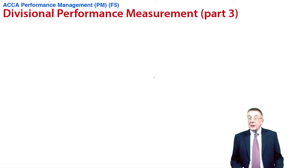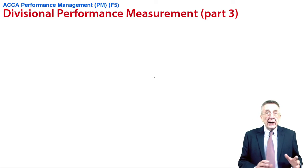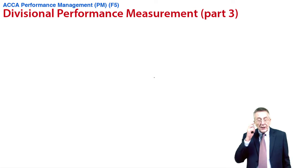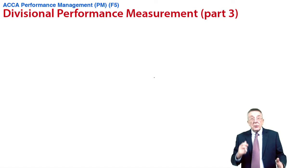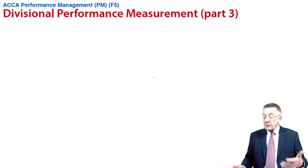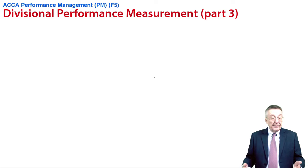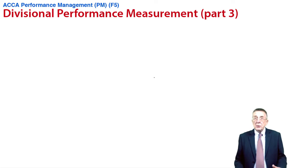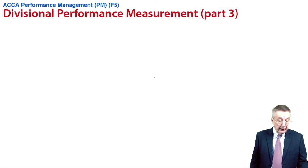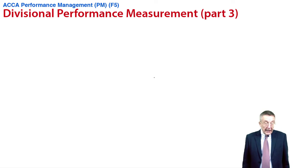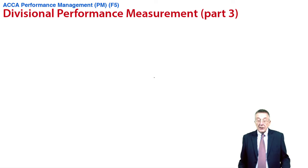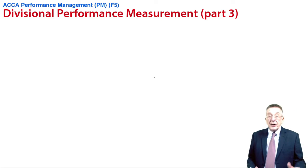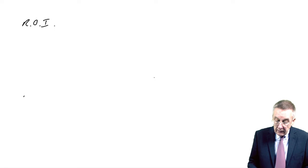This is the last of three lectures on divisional performance measurement. In the first lecture I talked about what we meant by divisions and so on. In the second one, I explained return on investment and residual income as performance measures. This one will only be brief, but the last space on the notes covers reasons for using return on investment or residual income.